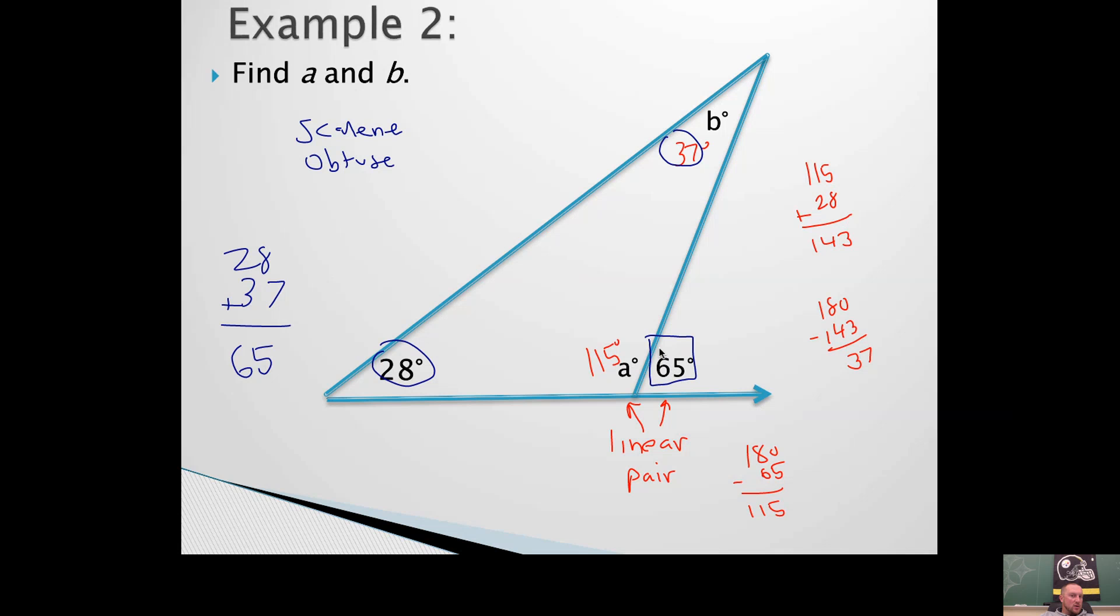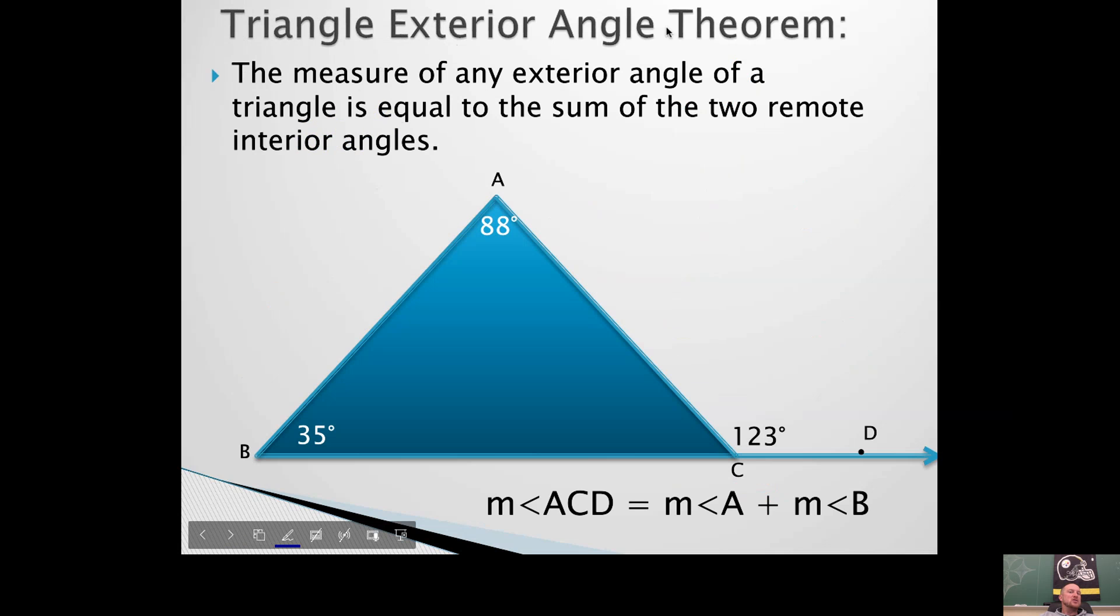If you have an angle that's outside the triangle, these two angles here that don't touch it inside the triangle, they're going to add up to it. That's the triangle exterior angle theorem.